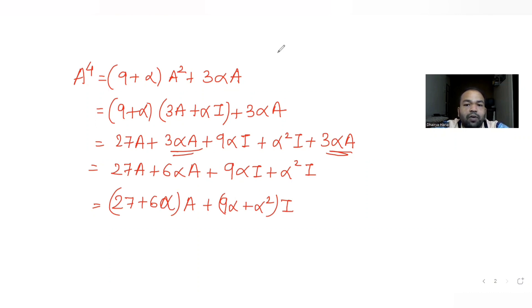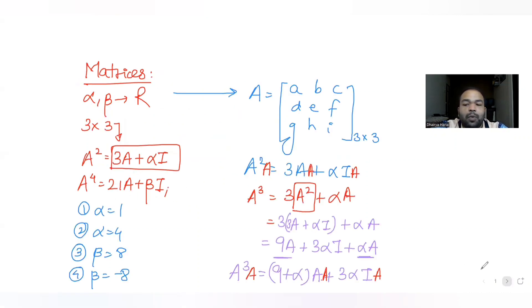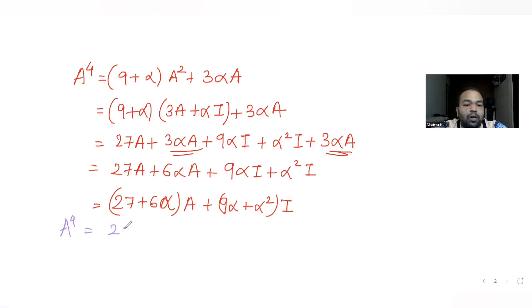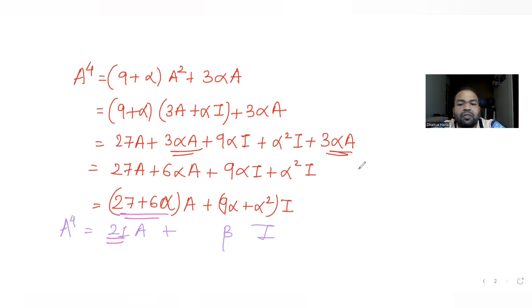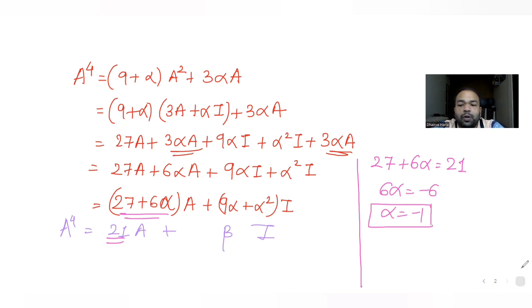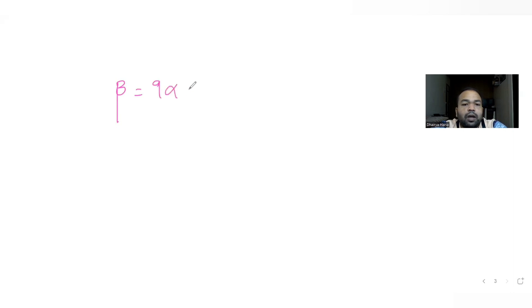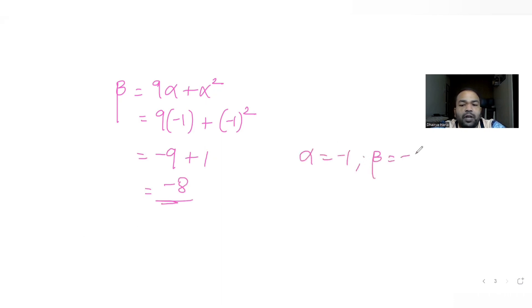We already know A⁴ = 21A + βI. Comparing coefficients: 27 + 6α = 21, so 6α = −6, giving α = −1. Then β = 9α + α² = 9(−1) + (−1)² = −9 + 1 = −8. So alpha is −1 and beta is −8.